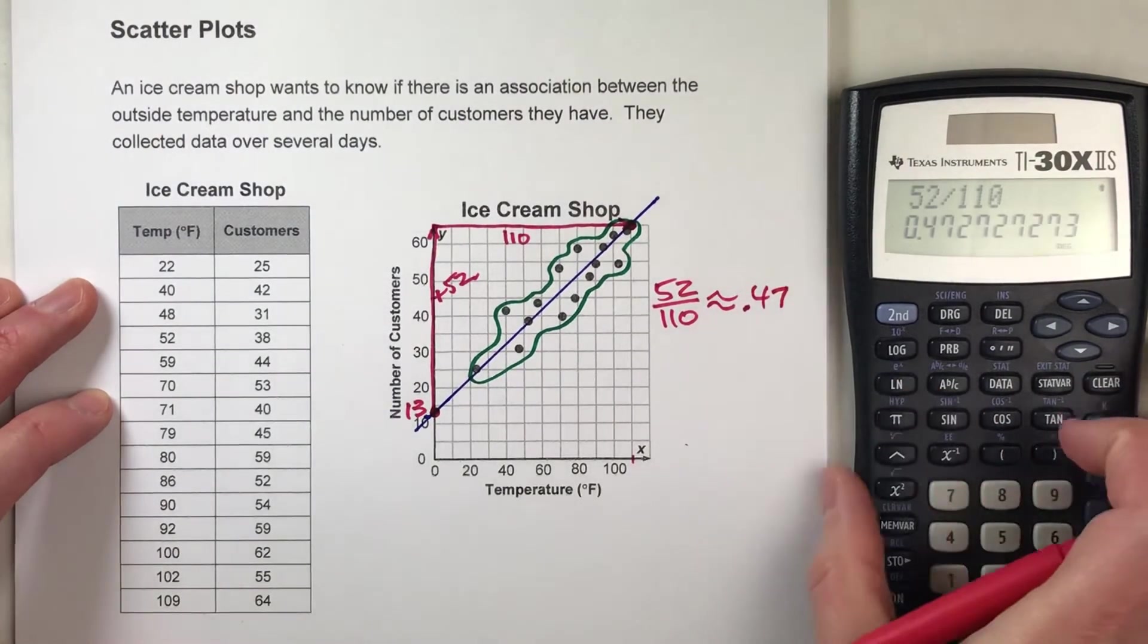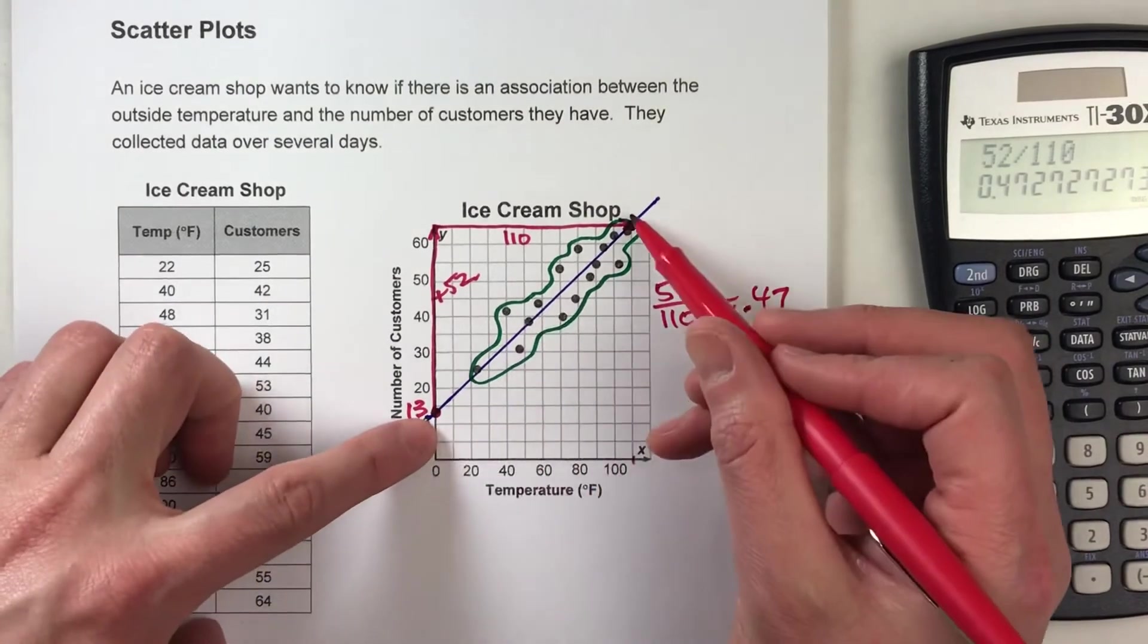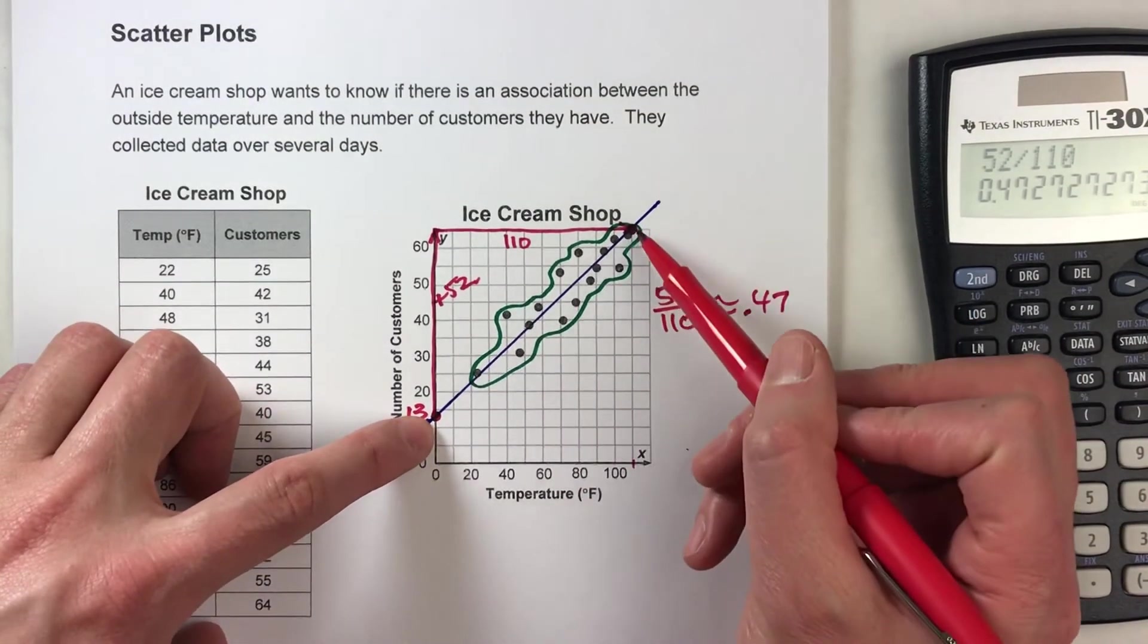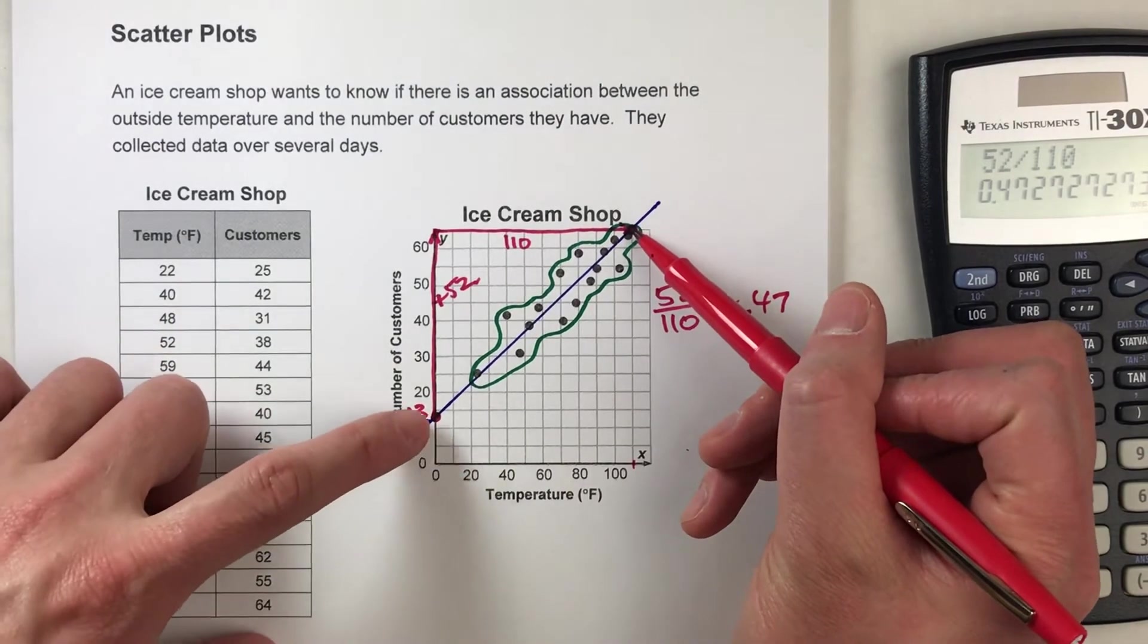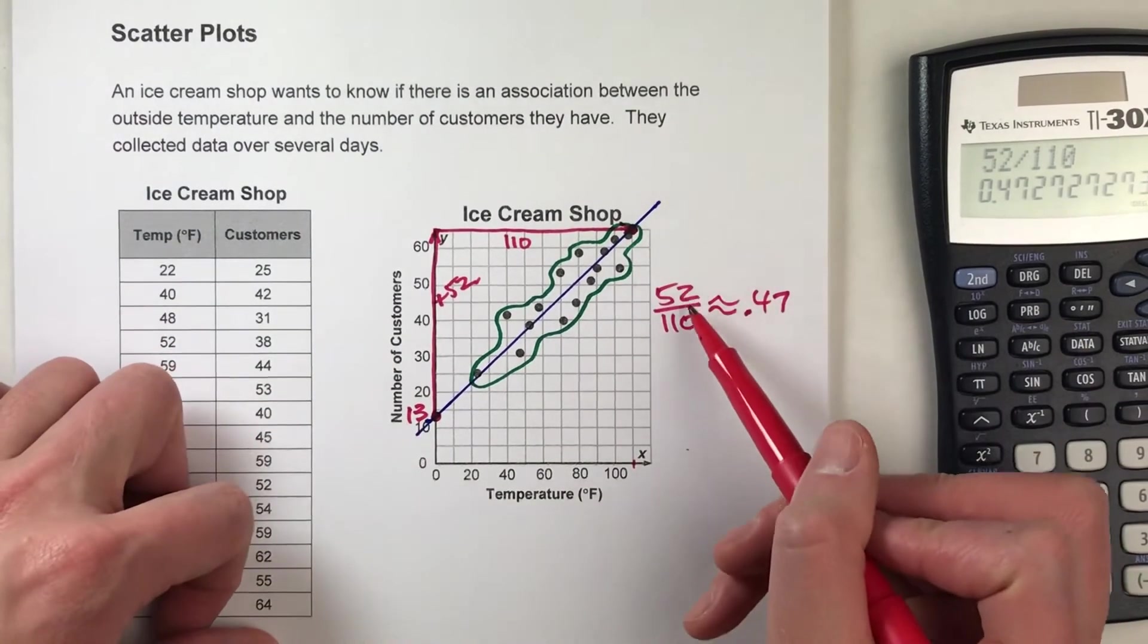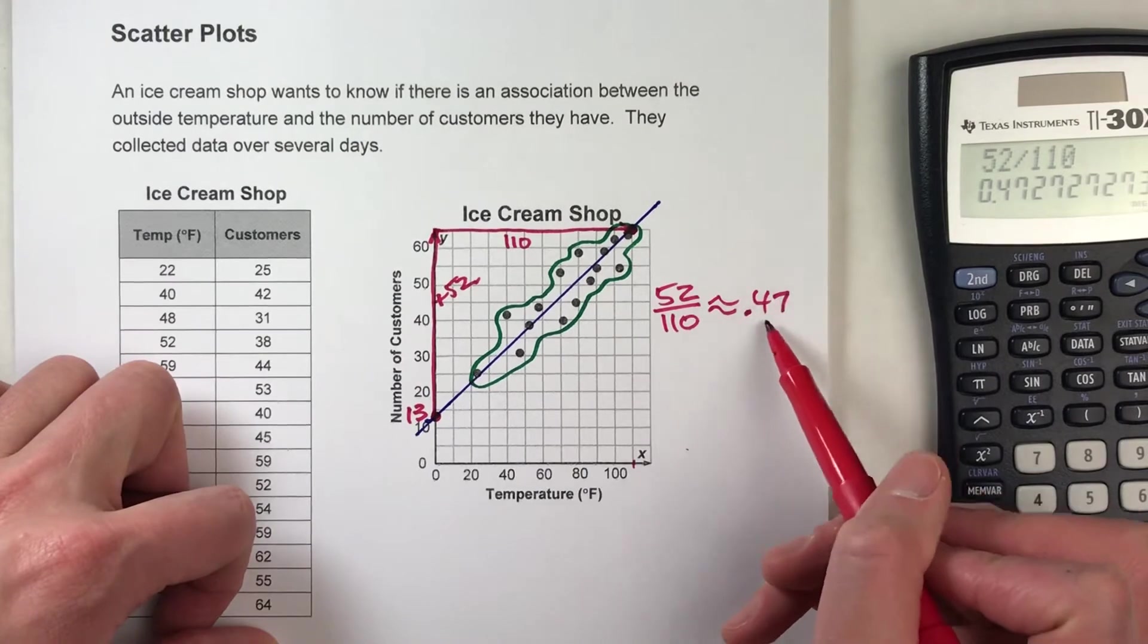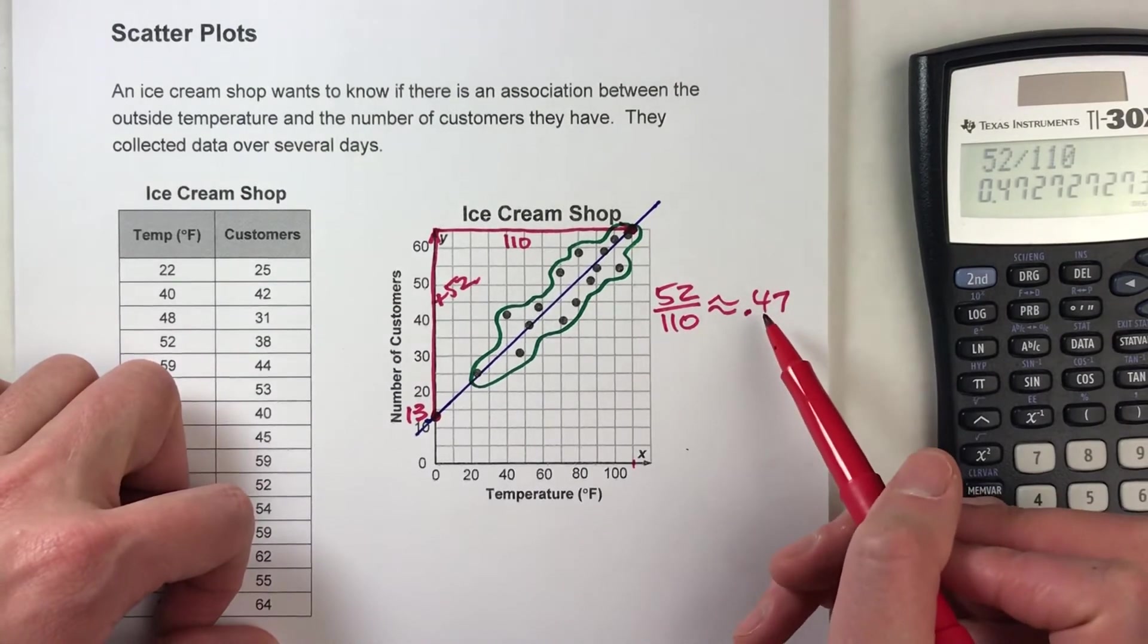Now, remember I told you pick two points far away from each other, right? The reason being is that if you're a little bit off on your estimate for one of these two points that are far away from each other, after you divide them, the slope is not going to be affected as strongly.